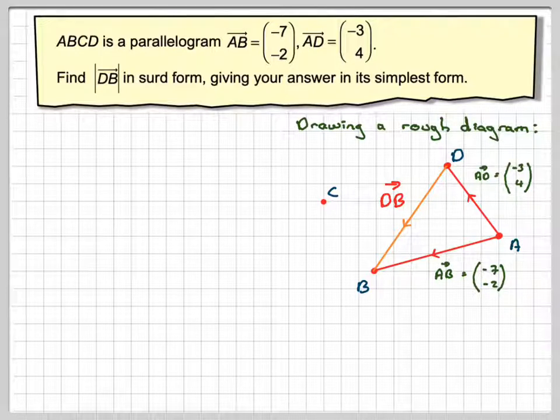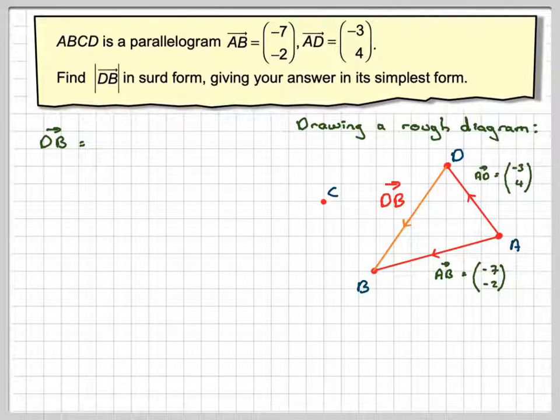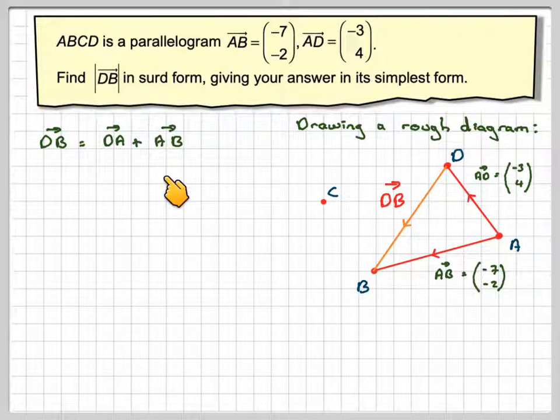Now in order to do this, we normally do it by calculation, but now we can visualize it. Now in order to find the vector DB, we can go DA plus AB, because we're supposed to do this by calculation. So DB will be DA plus AB.